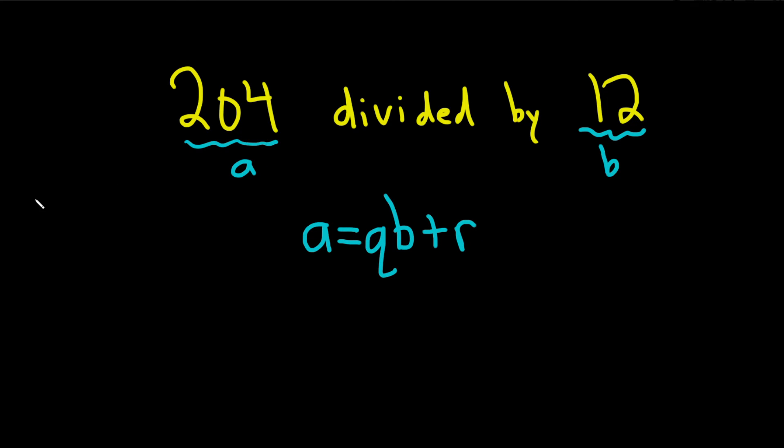Now what we want to do is actually perform the division. So we do 204 divided by 12. I'm going to put this in my calculator. Let's see, 204 divided by 12. I got 17.